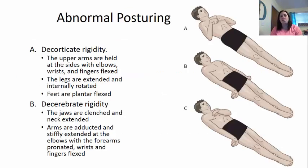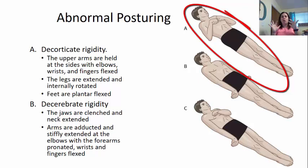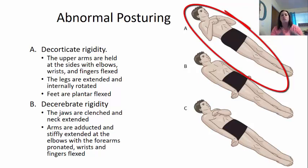Abnormal posturing comes in two main types. Decorticate rigidity: the upper arms are held at the sides with elbows, wrists, and fingers flexed — everything drawn in towards the chest. The legs are fully extended and internally rotated with toes pointed inward, and feet plantar flexed. Decerebrate rigidity: the jaws become clenched, neck is extended with head back, arms are abducted and stiffly extended at the elbows, forearms pronated, and fingers flexed. A combination can occur where one side is decorticate and the other is decerebrate, due to the way the brain is herniating and affecting each hemisphere differently.